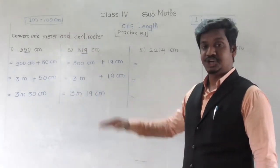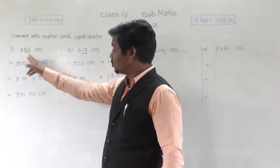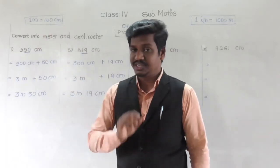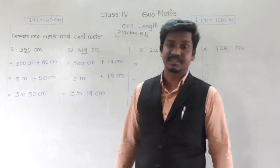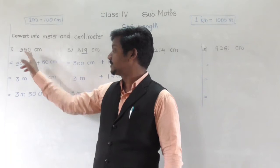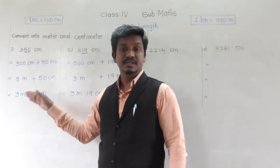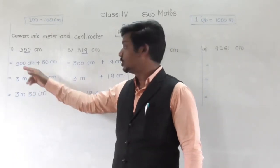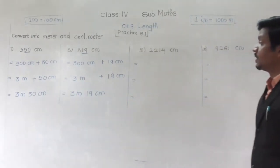In short, if you observe directly: in 350 centimeters the last two digits are your centimeters and the remaining digits are your meters — so 3 meters 50 centimeters. We get the same answer. But in exams, while converting, you must write all four steps properly.